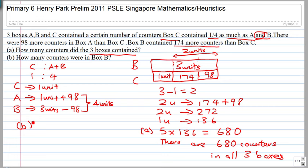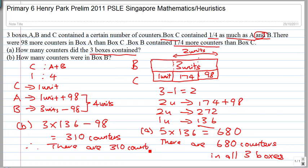How many counters are there in B? You know B, there are three units minus 98 counters. So three multiplied by 136, since 136 is one unit, minus 98, and that will give you 310 counters. So therefore there are 310 counters in box B.